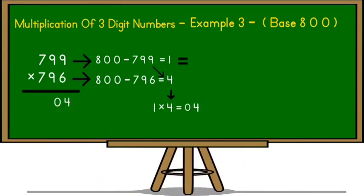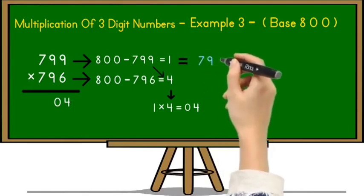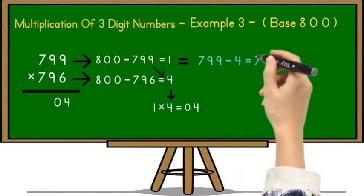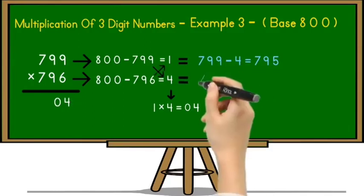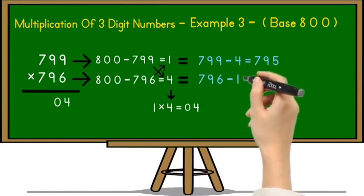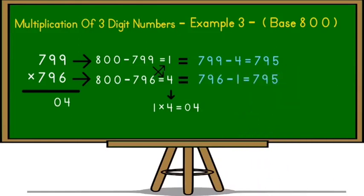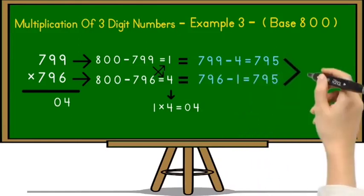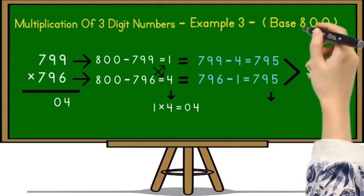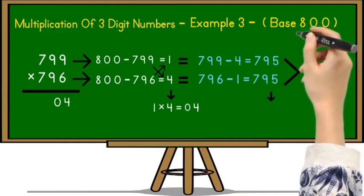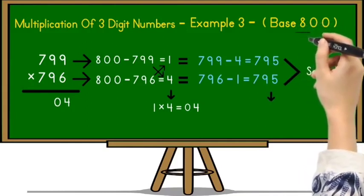After that subtract 4 from 799. So it is equal to 799 minus 4 which is 795. And next we have to subtract 1 from 796. So 796 minus 1 is equal to 795. So in both places we got same number. So that 795 we have to take in the next step and multiply it with 100 plus digit of base number which is 800.